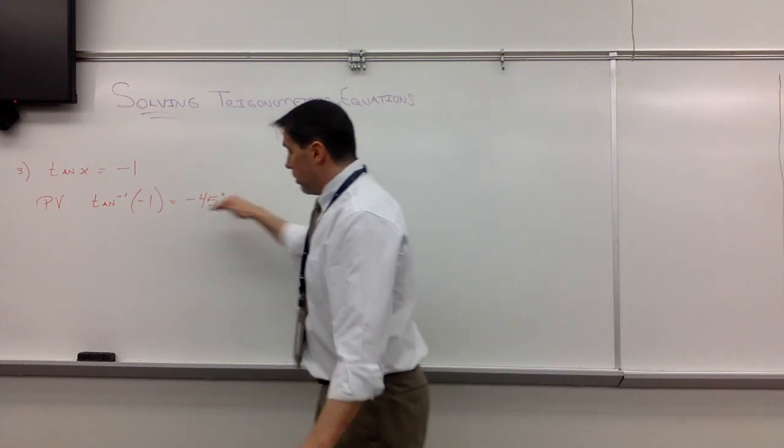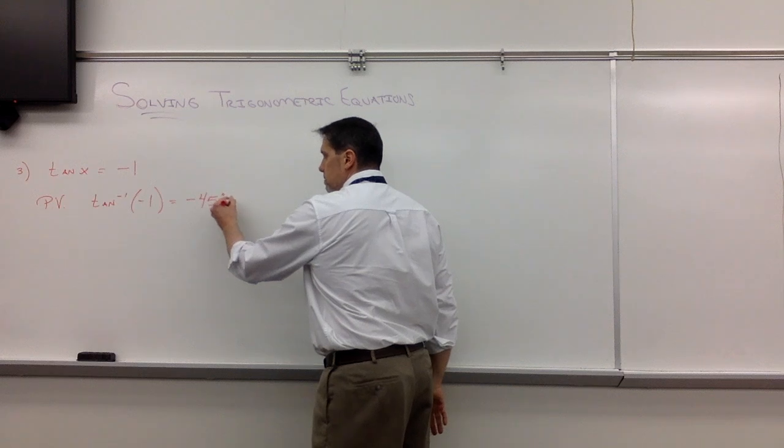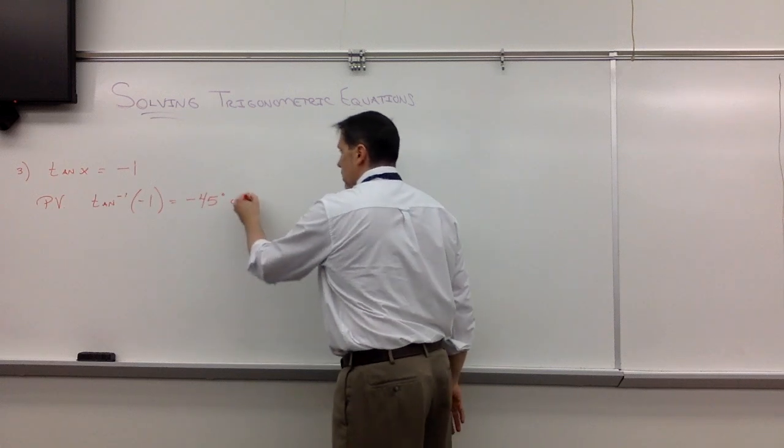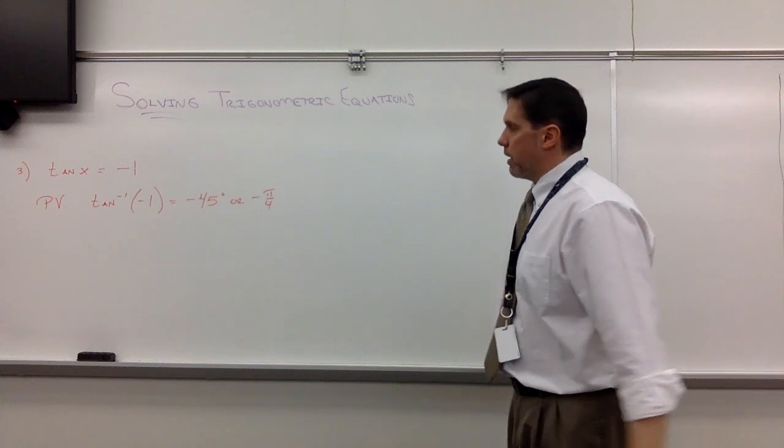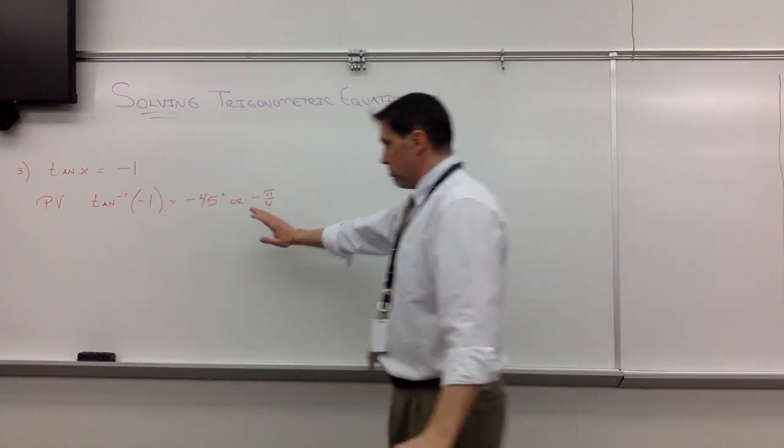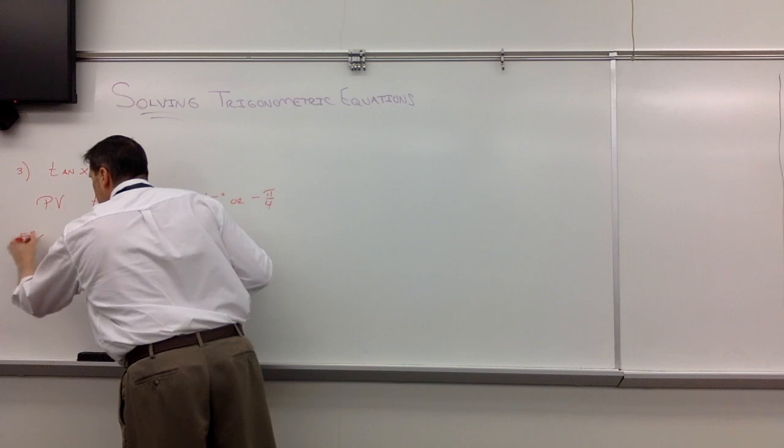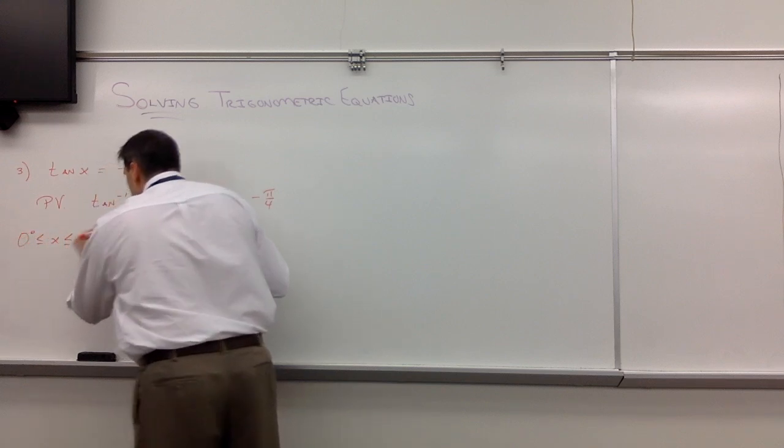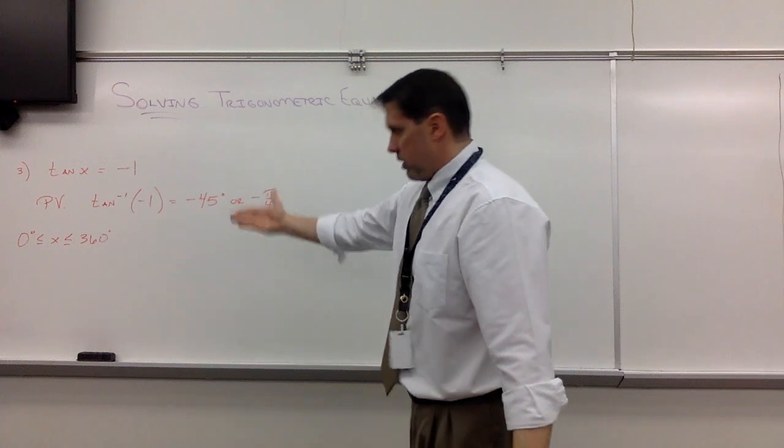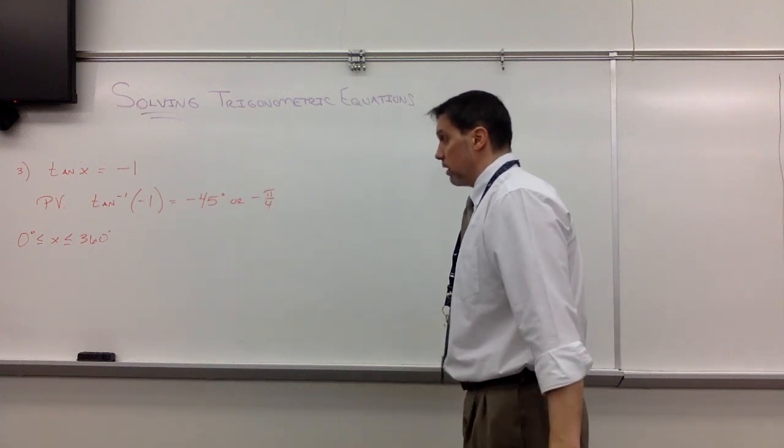If they ask, what's the principal value here? You would say it's negative 45, or if you ask me for radians, I would say negative π/4, of course. So negative 45 or negative π/4 if they ask for radians. Let's try 0 less than or equal to x less than or equal to 360. And once we get these degree answers, we'll be easily able to convert them to radians.